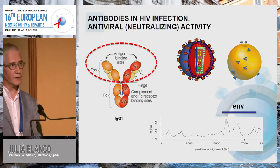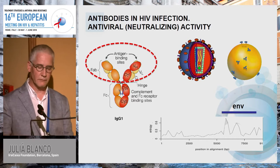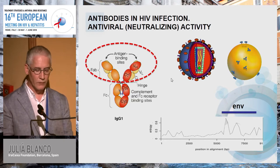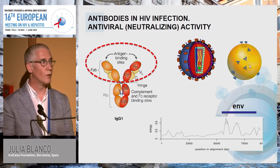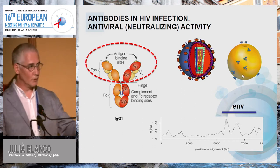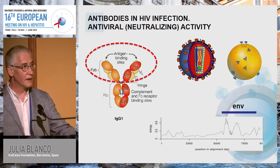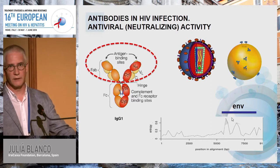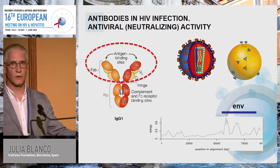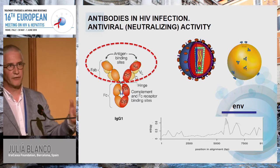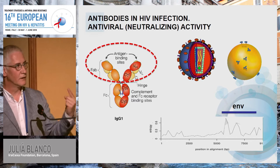After HIV infection, the immune system makes 100,000 antibodies against the virus, but only antibodies against the envelope protein of the virus are able to recognize the viral particle or infected cells. The envelope is the most variable gene of HIV, so most antibodies that recognize it only recognize a few variants or a single variant.